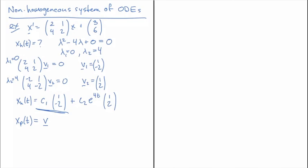I'm going to leave my guess as just this V vector, and from that I get that X_p prime of t equals 0 because V is a constant vector. That means my equation is now 0.